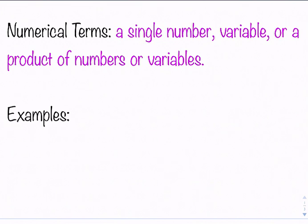So some examples, we could say that the number 4 is a single number, which would also be a numerical term, just on its own. We could say 512 is a numerical term. We could say x is a numerical term, or 3x, because it is a product of numbers and variables.